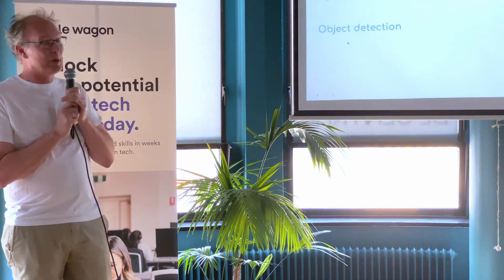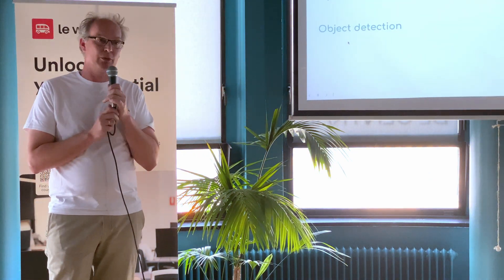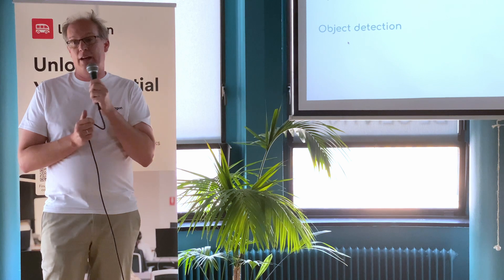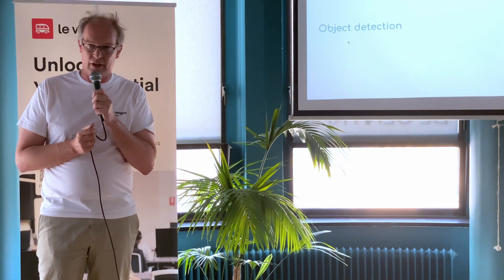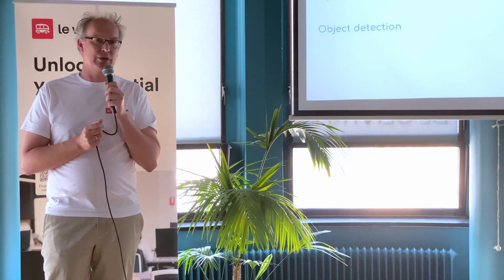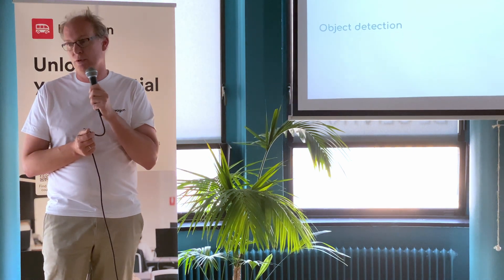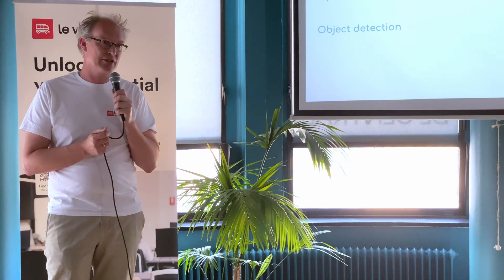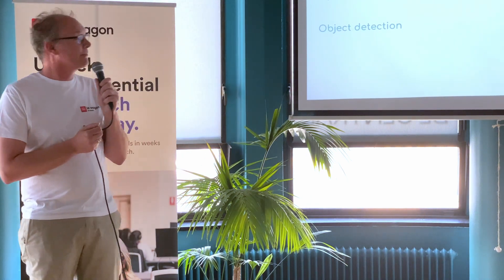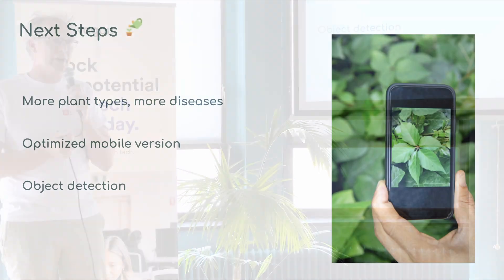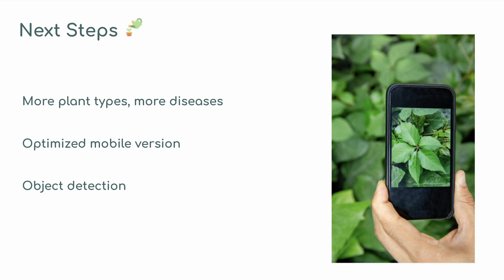There are things that can be improved. In two weeks we couldn't do everything — we only have 40 categories, which is not enough, so we need to train on a lot more diseases and plants. For that, we need a lot more pictures. Secondly, it's not really optimized for mobile even though it works, so we need some web dev people to improve that.